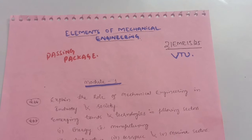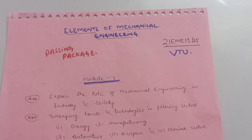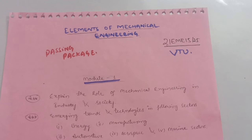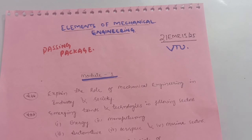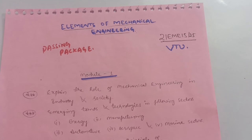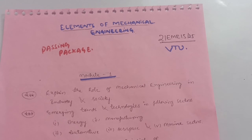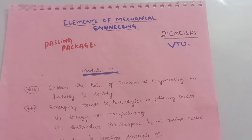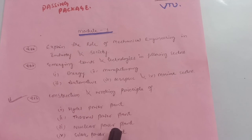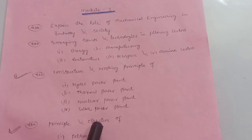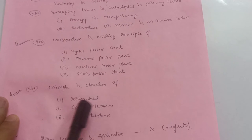The theoretical part you can easily understand in your own language and write it in your own words in the examination. The most important part is construction and working principle. As mentioned, focus on diagrams — many students are just making diagrams and writing some theory and they are getting passing marks. The important topics are: hydel power plant, thermal power plant, nuclear power plant, and solar power plant. Just draw neat sketches.